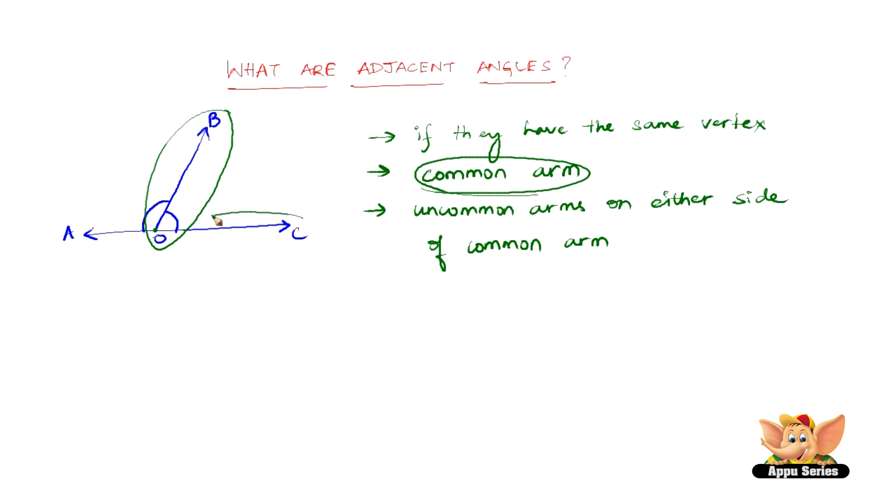What is an uncommon arm? Now O, C does not figure in the angle A, O, B and A, O does not figure in the angle B, O, C. These are the conditions for any angles to be adjacent angles.